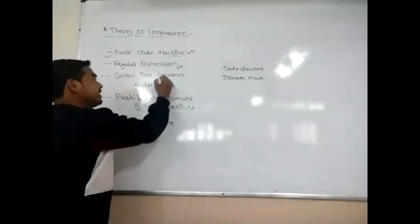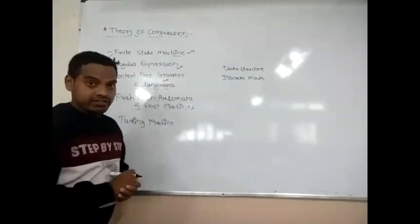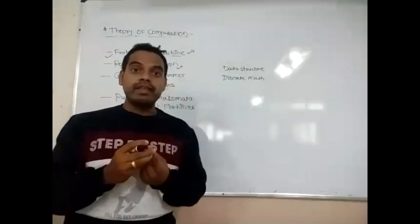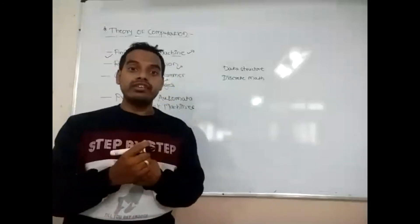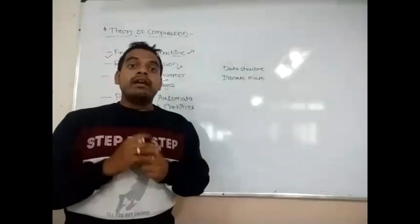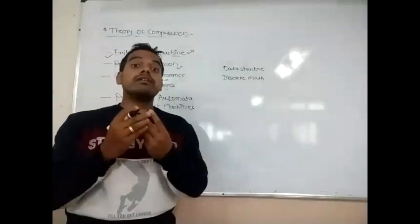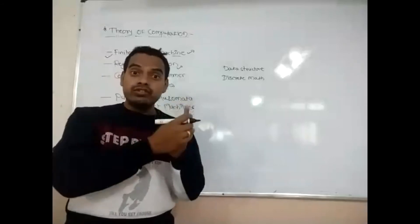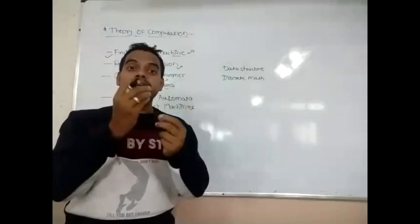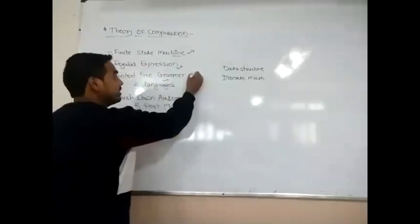The third unit is Context Free Grammar and Languages. Here we will discuss different grammars and different languages available in Theory of Computation. We will learn about derivation trees, leftmost derivation, rightmost derivation, and basic concepts related to context free grammar.